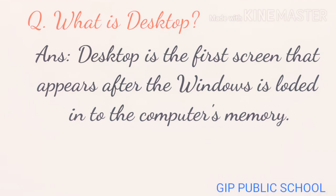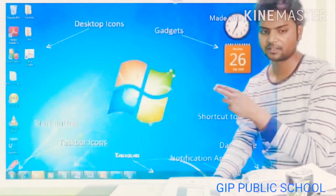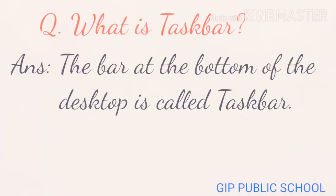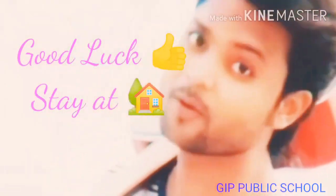Write this down in your copy. What is an icon? The small pictures on the desktop are called icons, which represent a file, folder, or program. Taskbar: the bar at the bottom of the desktop is called the taskbar.